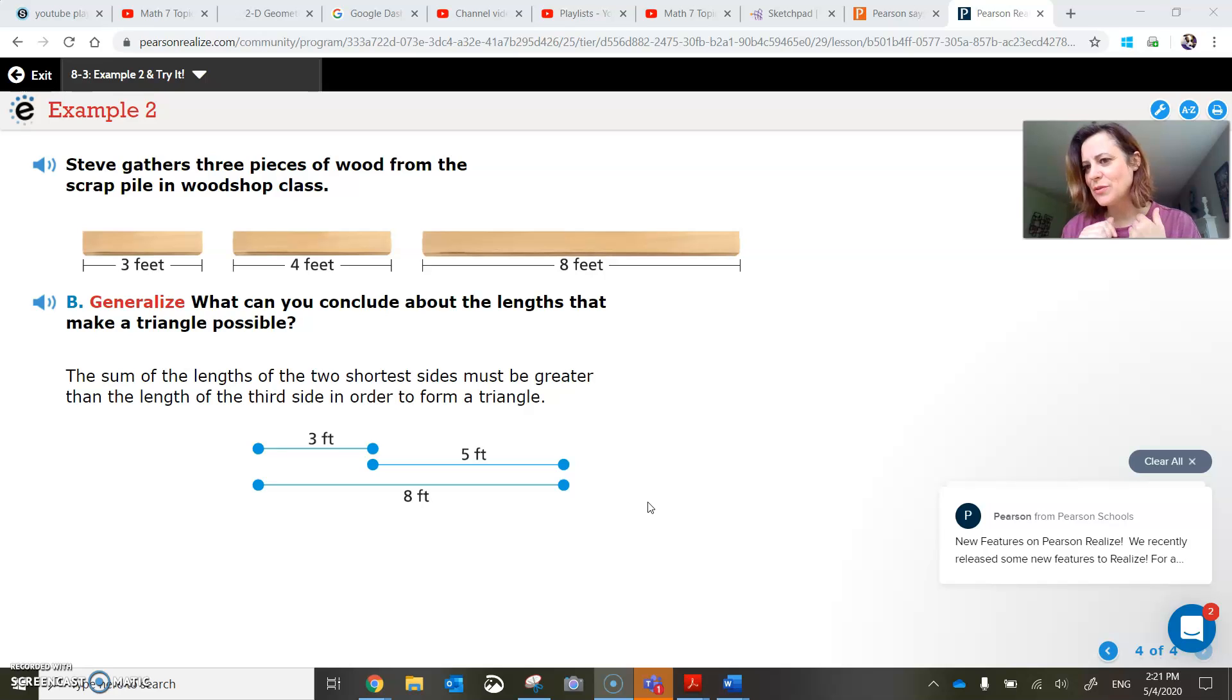What would happen if those two trees were exactly the same length when added up as the road? Would that make a triangle? It would not because if these two added up are the same distance as the road across, then when they fall, the moment they meet, they'll be flat on the ground. So they have to be bigger than that road that they're falling across. And that's it for that one.